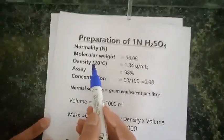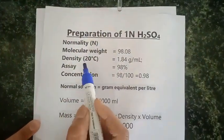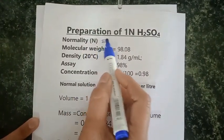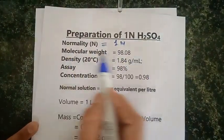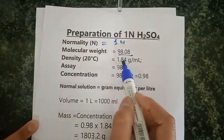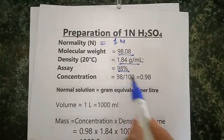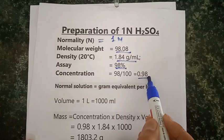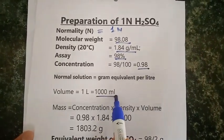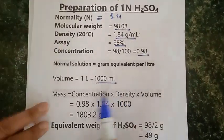Now to prepare one normal H2SO4, how much do I need to take of concentrated sulfuric acid? For this purpose, I have given molecular weight, density, and SA. To convert this SA into concentration, I have divided it by 100 and get 0.98.